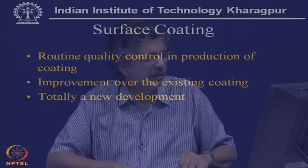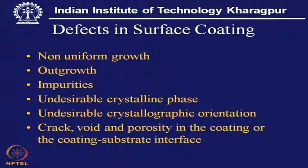We understand three types of coating: one routine, one with a little bit of improvement, and another which is totally new. Now comes the defects in surface coating. What are those defects? Number one: a non-uniform coating — it has grown in a very non-uniform manner over the entire substrate. Depending upon some preferential sites, we have large growth, and in certain places very low growth.